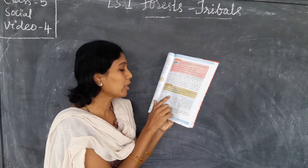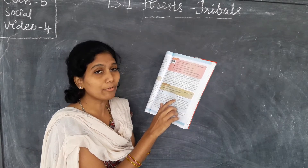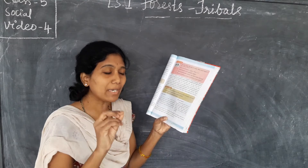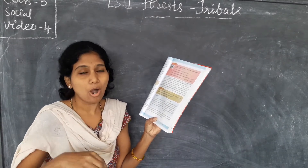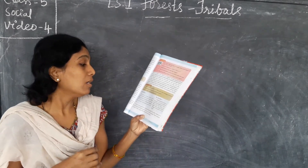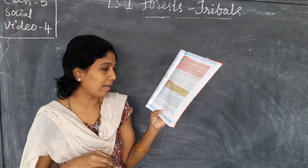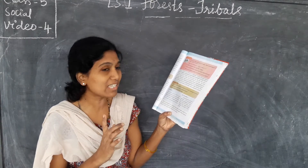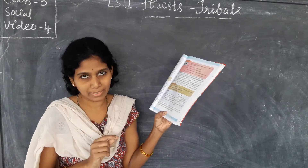Do you know the forest occupied 6,92,027 square kilometers, meaning 21.5% of the land area in our country. How much area is occupied by the forest? 21.5% in our country. Madhya Pradesh occupies first place in terms of forest area, which is 77,000 square kilometers.